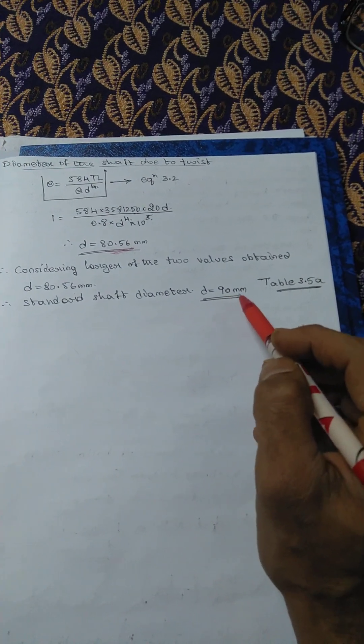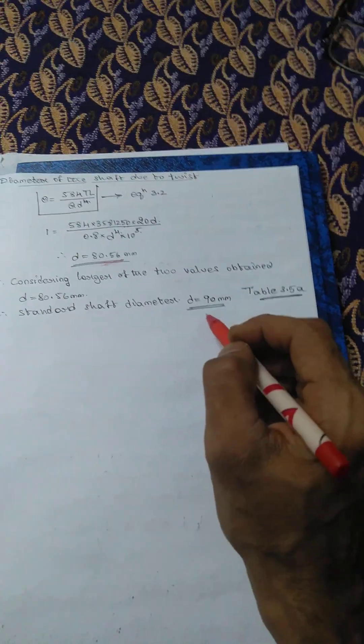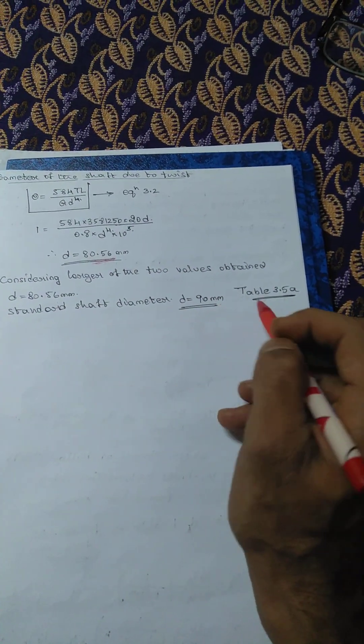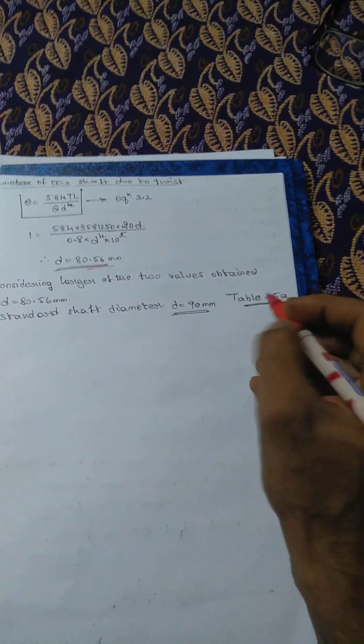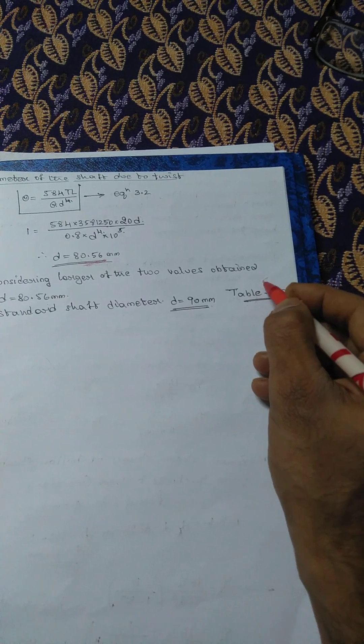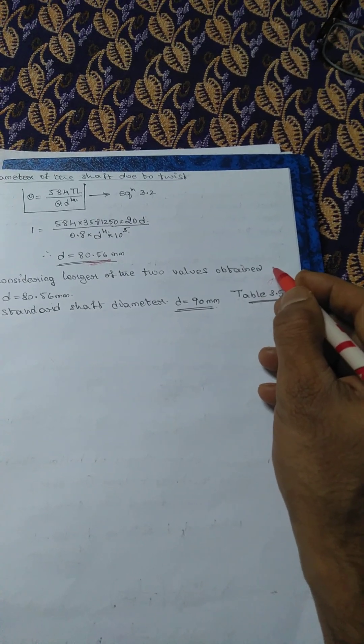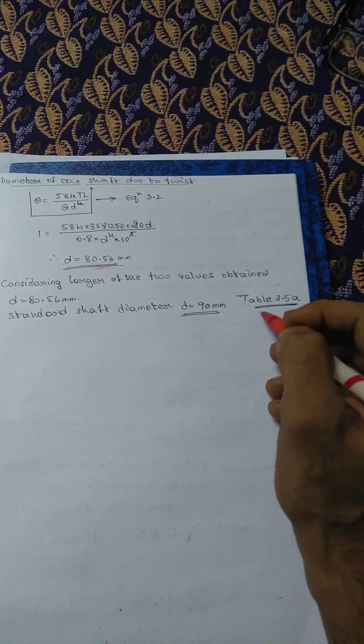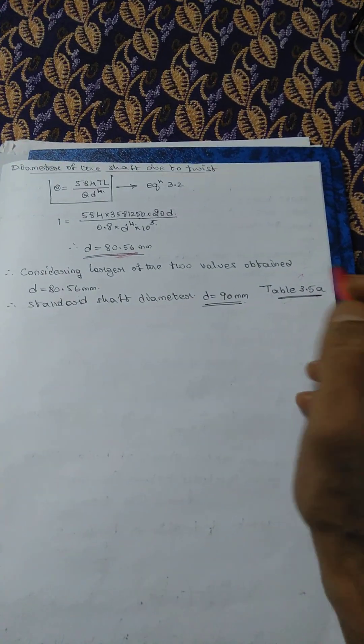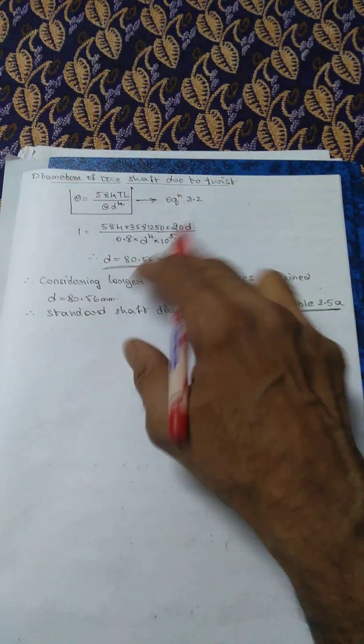Therefore the standard diameter of the shaft is D equals 90 millimeters. The standard diameter is available in table 3.5a, chapter 5, design of shaft chapter in the data handbook is the third one, third chapter. Find these values and thank you.